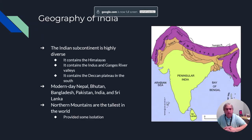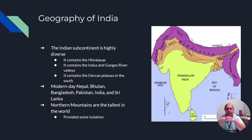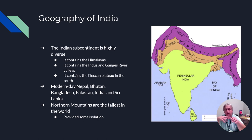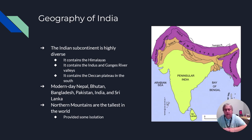The very first slide here covers the geography of India. The geography of India is very diverse — you've got a highland peninsula, mountains, rivers, rainforest, and some desert. The most important features are going to be the Himalayas at the top, the Ganges and Indus rivers, and then the Deccan plateau, which is the southern part of India.